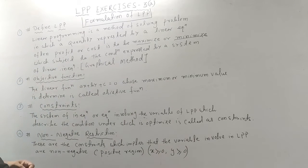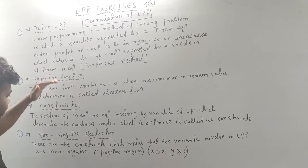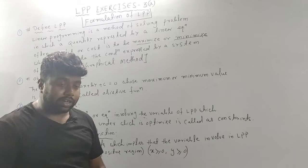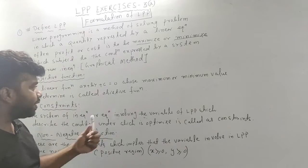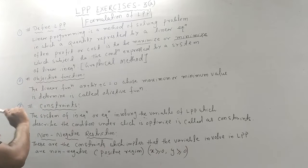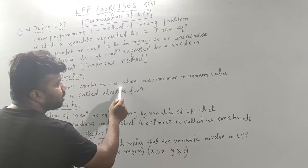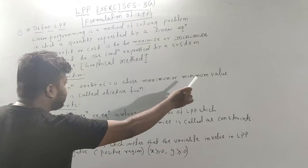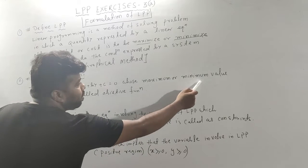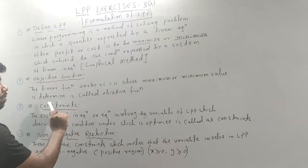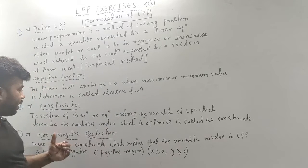So that is your LPP. Now, the objective function: the linear function z = ax + by (to be maximized or minimized) is called the objective function.